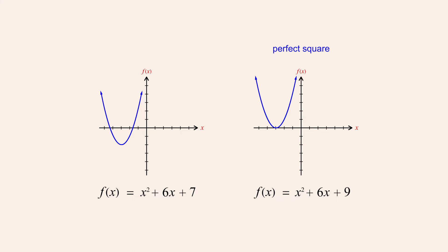Since this quadratic expression is a perfect square, it has two identical linear factors. In this example, the two factors are both x plus 3. So this perfect square quadratic can also be written as x plus 3 quantity squared. In fact, all perfect square quadratics can be written as the square of a single linear expression, which is why they are called perfect squares. Since identical linear factors share the same zero, perfect square quadratic functions have only a single x-intercept.